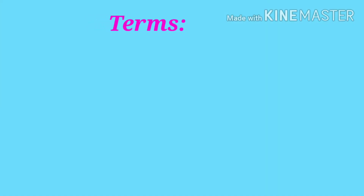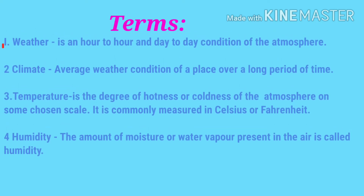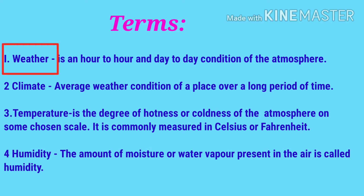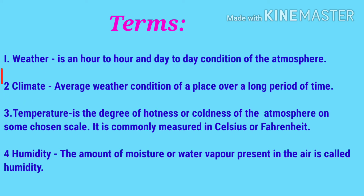First we'll do some important terms from the chapter. Term number one is weather — it's an hour to hour and day to day condition of the atmosphere. The next term is climate — it's the average weather condition of a place over a long period of time. The next term is temperature — it is the degree of hotness or coldness of the atmosphere on some chosen scale.